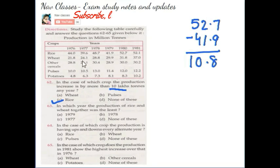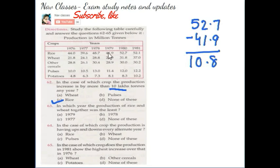In other cases as well, if you want to check, you can see the change is only 3 to 4, or around 5 to 6. The change of more than 10 lakh is in the case of rice. So we can correctly say rice is the answer — 10.8 lakh tons.